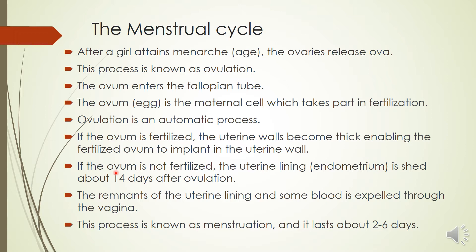If the ovum is not fertilized, the uterine lining — also called the endometrium — is shed. That means it goes away about 14 days after ovulation. The remnants, meaning the remaining parts of the uterine lining and some blood, are expelled through the vagina. This process is also called the period, and is known as menstruation.